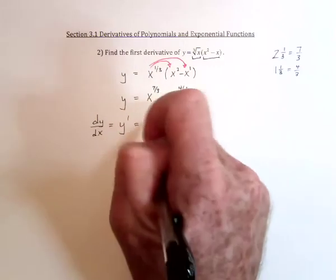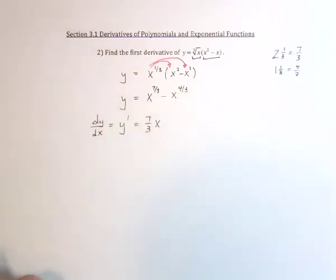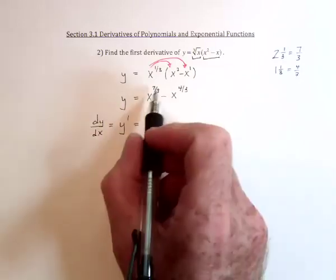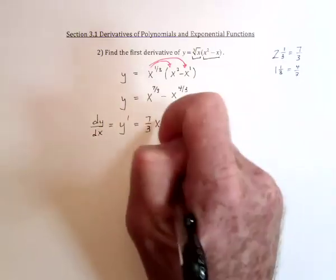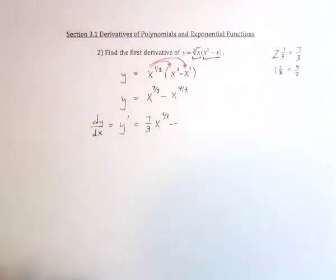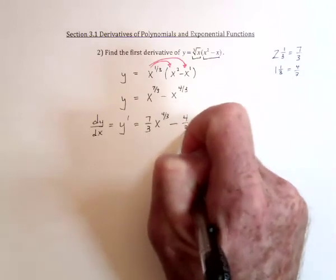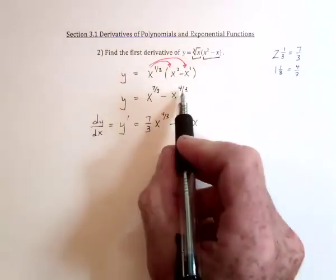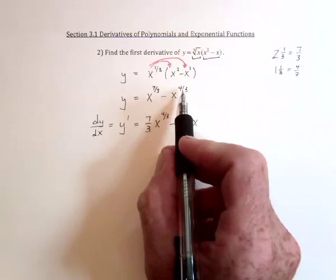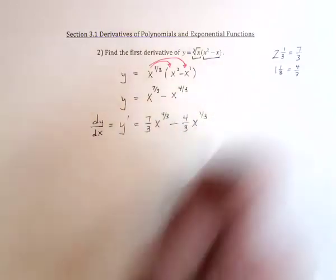Bring the exponent down in front: seven-thirds. Then subtract one, so subtract three-thirds, which leaves four-thirds. For the next term, bring the exponent four-thirds down in front, subtract one — which is taking away three-thirds — leaving one-third.